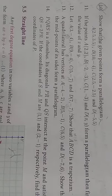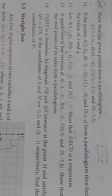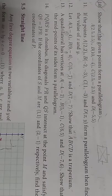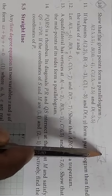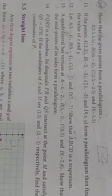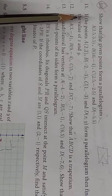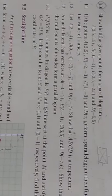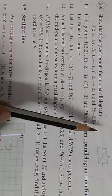First, parallelogram properties: opposite sides are parallel. The other concept is that the diagonals bisect each other. So if we look at the slope concept, we will check opposite sides parallel. If we look at the midpoint concept, we will verify that the diagonals bisect each other.